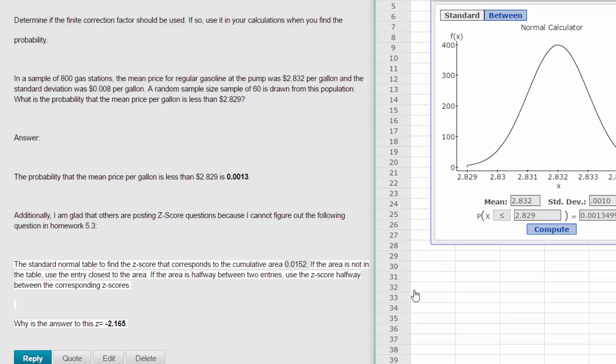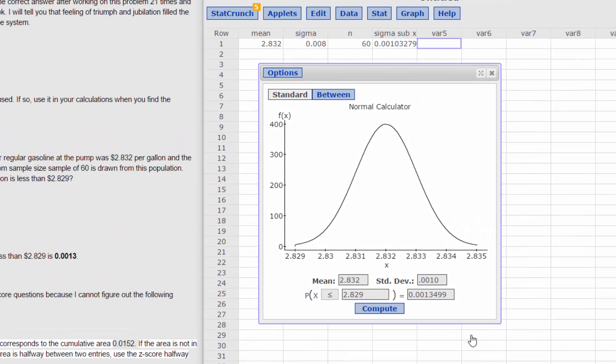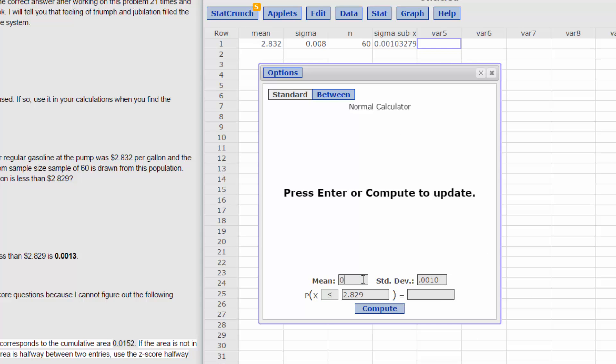The second question that this person had was that you suggested to use the standard normal table to come up with the z-score that has a cumulative area to the left of 0.0152. And that's a very small probability. But we can use our normal calculator again in StatCrunch to solve this. Since we're talking about z-scores, it's our standard normal curve with mean of zero and standard deviation 1. I'll put those back in. And the probability to the left is 0.0152. I've got my less than or equal, everything pointing to the left, which is that side of the curve. I click on compute.